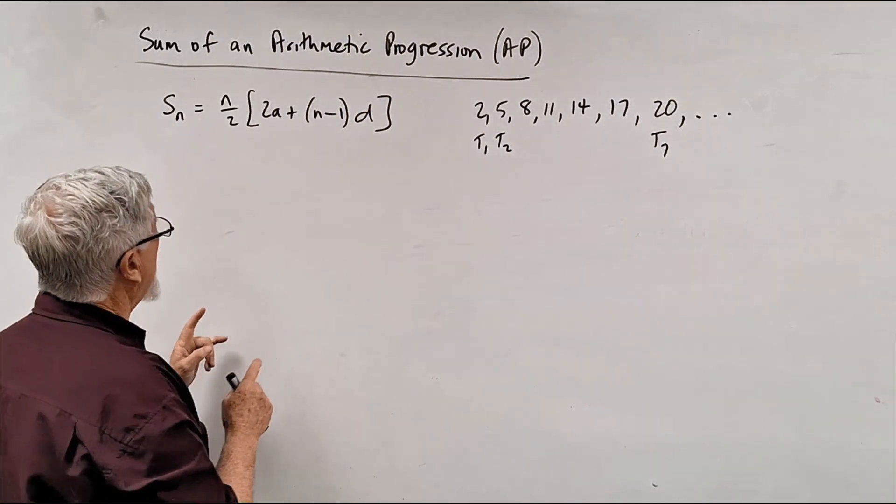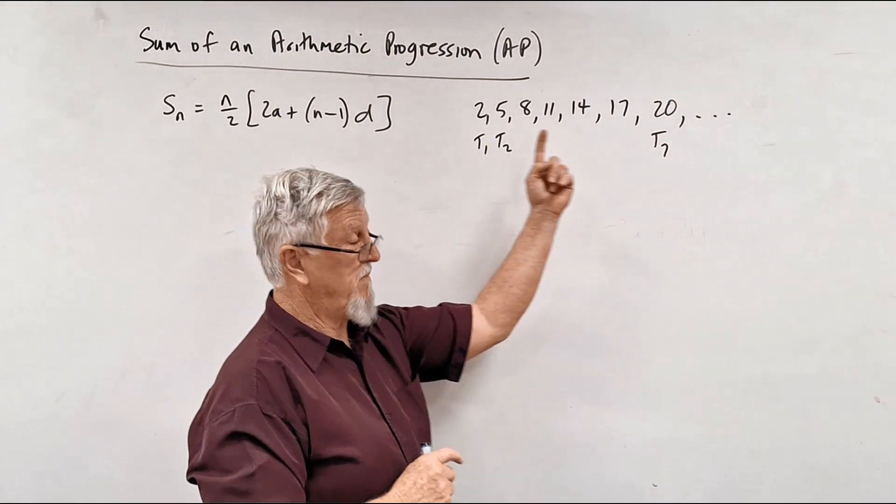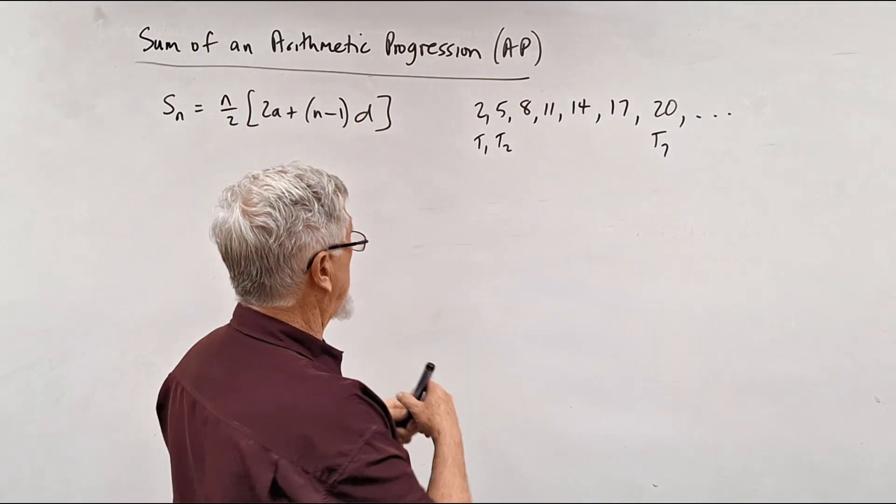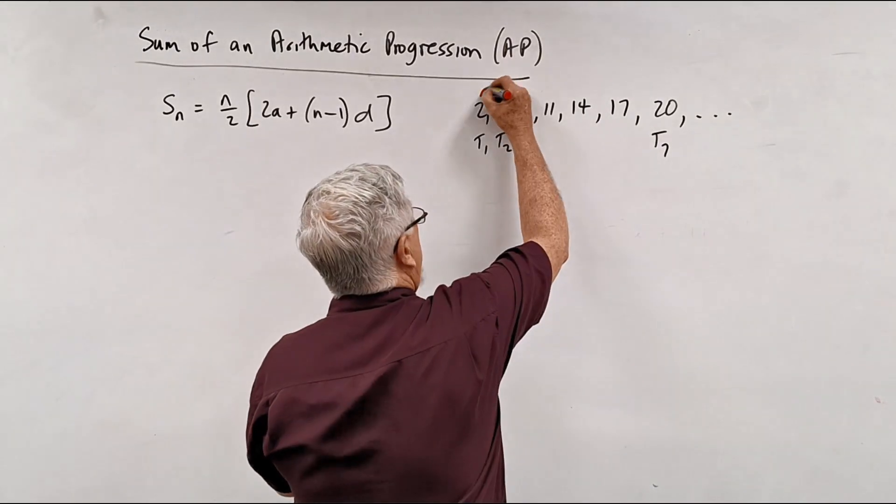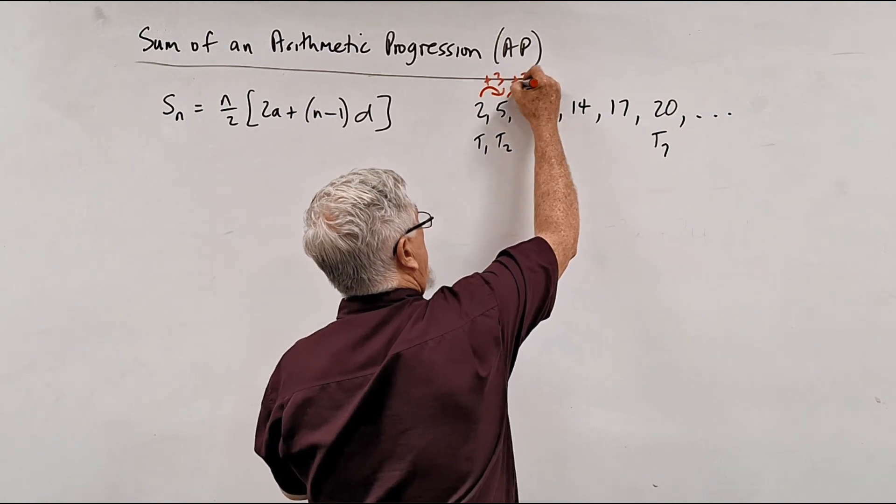This time we're going to get the sum of the numbers, the sum of the progressions. So if I look at this one here, you can obviously see that that's going plus 3 and that's going plus 3.